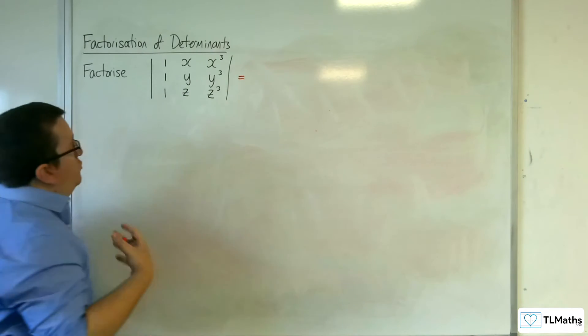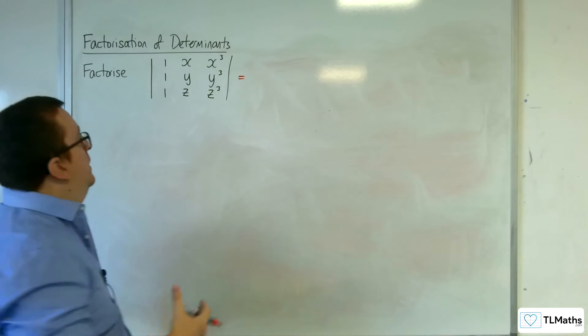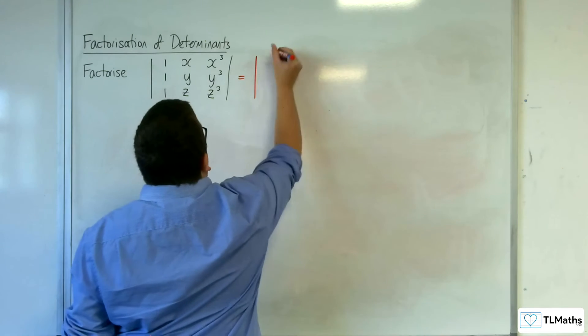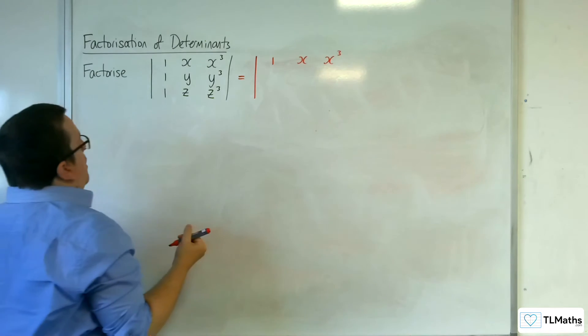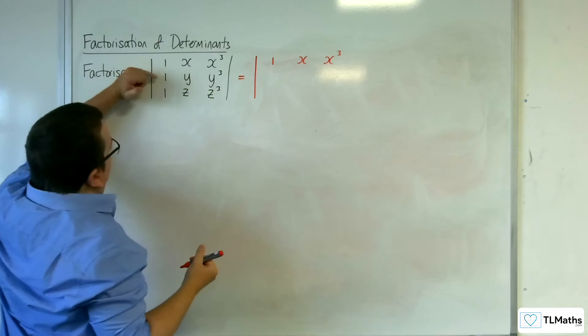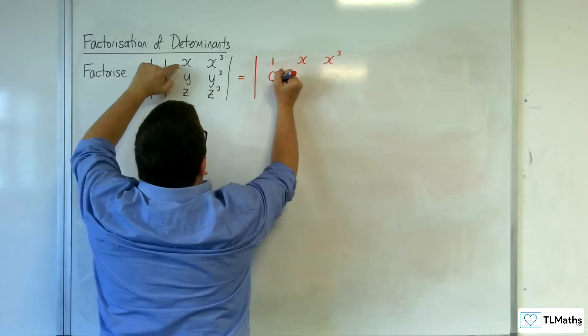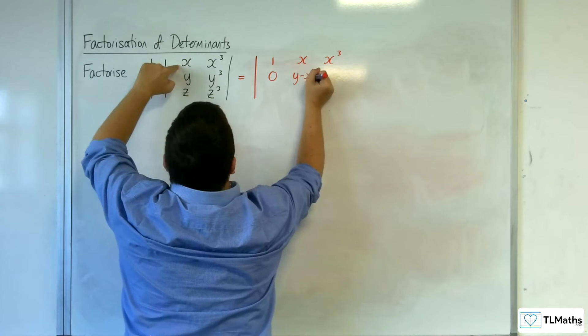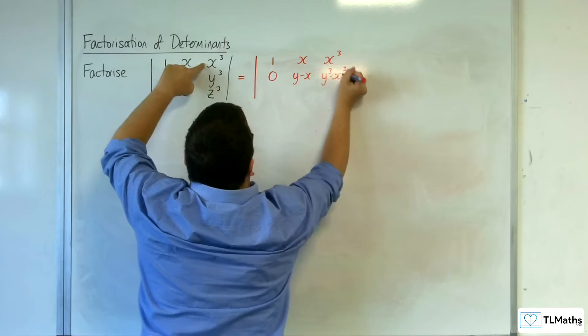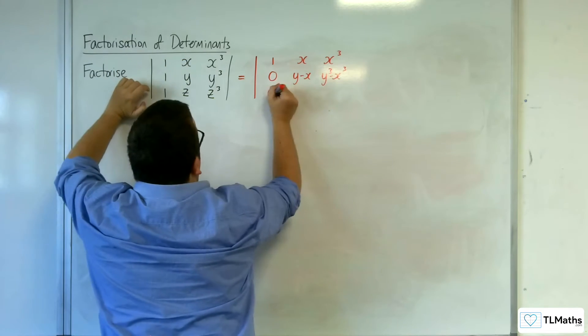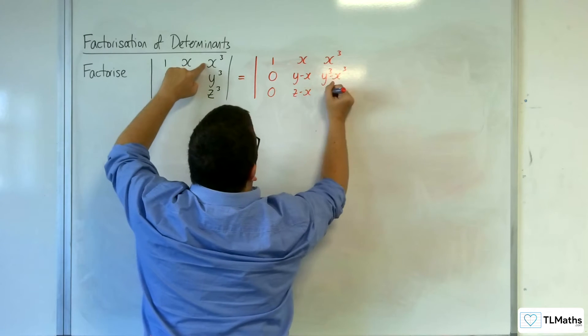I'm going to subtract row 1 from row 2 and row 3. So, I'm going to still have 1, x, and x cubed in the top row. The second row is going to be 1 take away 1, so 0; y take away x; and y cubed take away x cubed. And the bottom row is going to be 1 take away 1, so 0; z take away x; and z cubed take away x cubed.